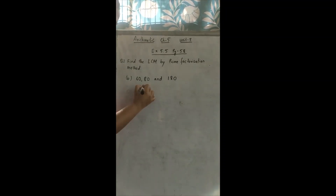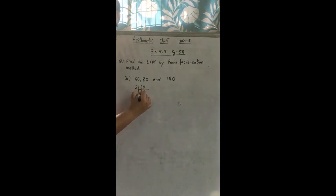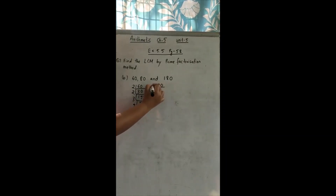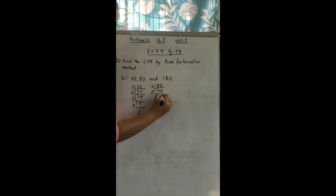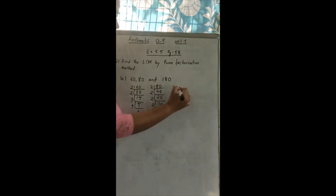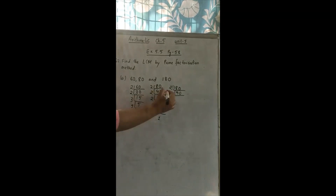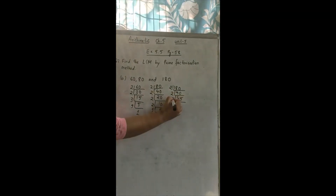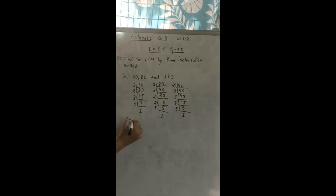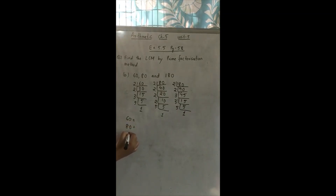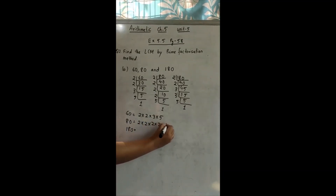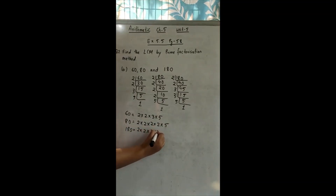For 60: 60 ÷ 2 = 30, 30 ÷ 2 = 15, 15 ÷ 3 = 5, 5 ÷ 5 = 1. For 80: 80 also goes with 2: 80 ÷ 2 = 40, 40 ÷ 2 = 20, 20 ÷ 2 = 10, 10 ÷ 2 = 5, 5 ÷ 5 = 1. For 180: 180 also goes with 2: 180 ÷ 2 = 90, 90 ÷ 2 = 45, then it goes with 3: 45 ÷ 3 = 15, 15 ÷ 3 = 5, 5 ÷ 5 = 1. Now we will write all the factors: 60 = 2 × 2 × 3 × 5; 80 = 2 × 2 × 2 × 2 × 5; 180 = 2 × 2 × 3 × 3 × 5.